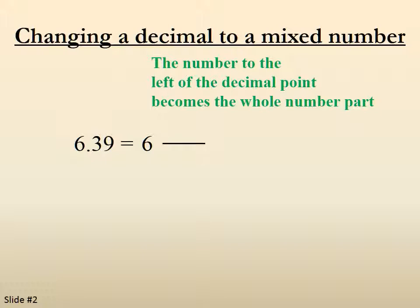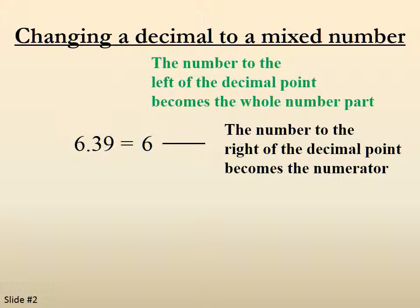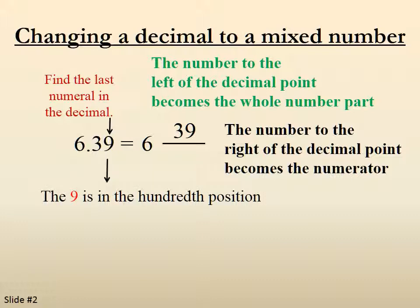Fraction bar. The number to the right of the decimal point becomes the numerator, which in this case is 39. We find the last numeral in the decimal, which is a 9. The 9 is in the hundredth position, so we put a hundred in the denominator. So 6.39 becomes 6 and 39 one-hundredths.